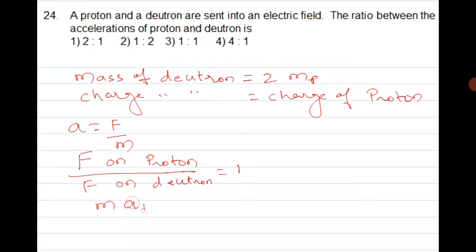Force on proton divided by force on deuteron is 1 because both have the same charge in the same electric field. But F equals m times a. So mass into acceleration gives us: mass is double, so 2m. The m cancels, giving a1 by a2 equals 2 by 1. That is 2 is to 1, so the first option is correct.